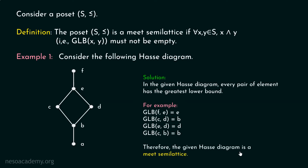Therefore, the given Hasse diagram is a Meet Semilattice. Greatest lower bound of f and e is e. Greatest lower bound of c and e is b. Similarly, greatest lower bound of every pair exists. Therefore, the given Hasse diagram is a Meet Semilattice.